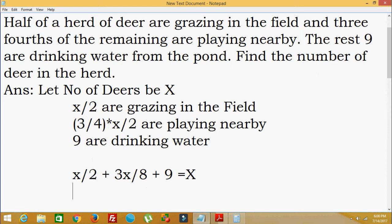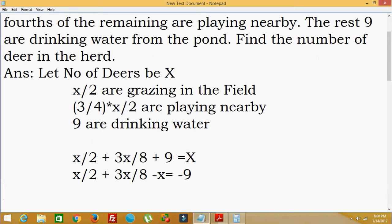Now we will bring x to the left-hand side and 9 to the right-hand side. So x/2 + 3x/8 - x = -9. We brought 9 to the RHS and x to the LHS so that all x terms are on the left.